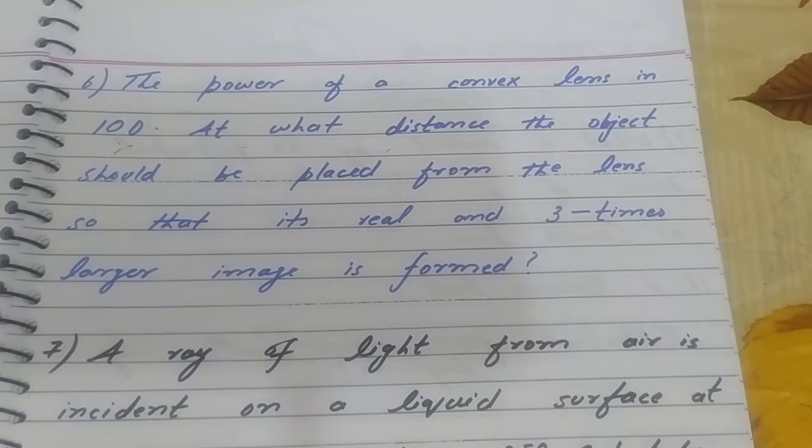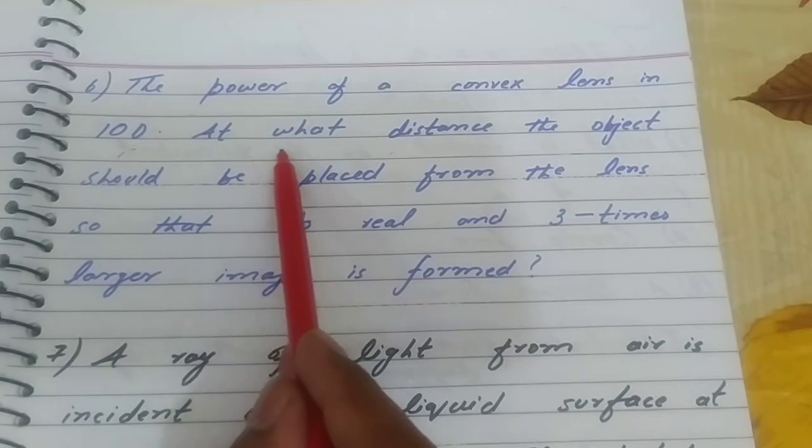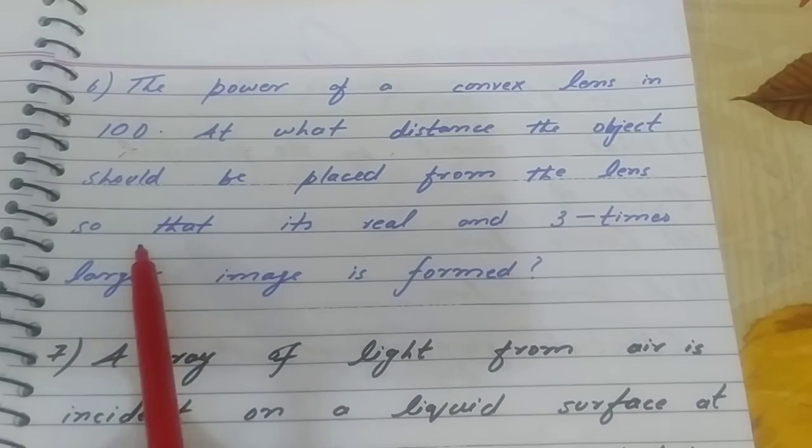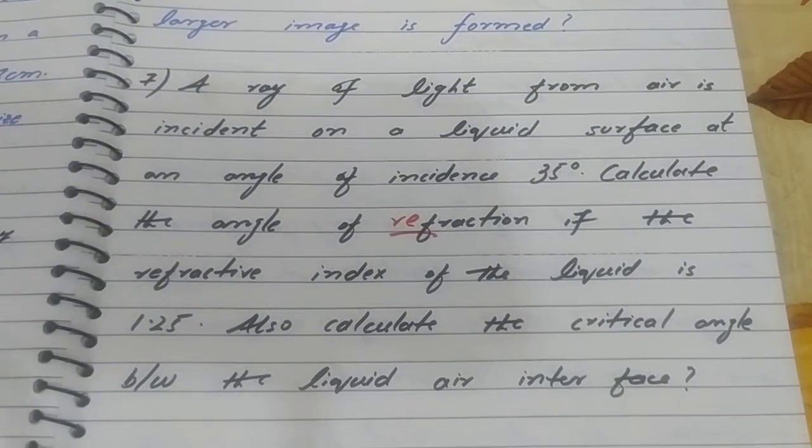Question six: The power of a convex lens is 10 diopters. At what distance should the object be placed from the lens so that its real and three times larger image is formed?